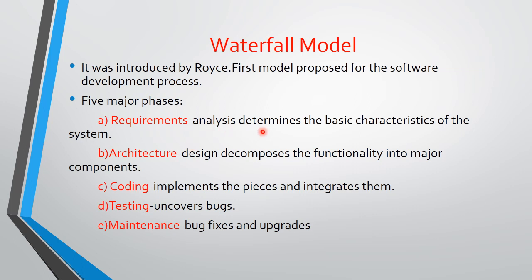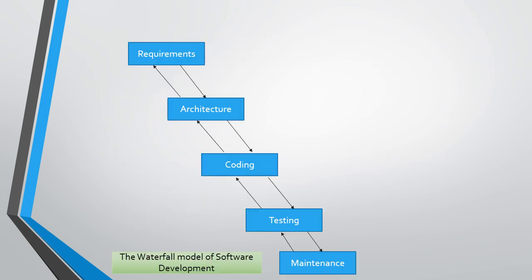Requirements analysis determines the basic characteristics of the system. Then comes architecture — design composes the functionality into major components. Then coding implements the pieces and integrates them, combining everything. Testing is used for uncovering bugs, that means errors. Maintenance handles bug fixes and upgrades. This is the waterfall model: requirements, architecture, coding, testing, and maintenance.